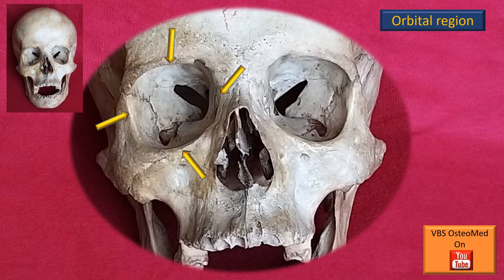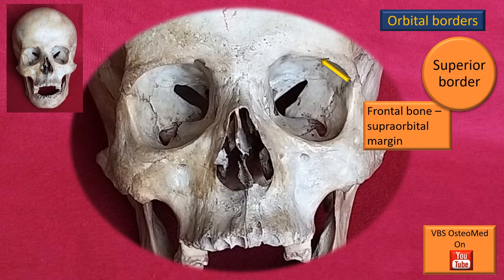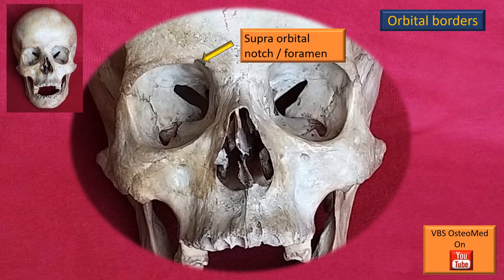These are the four borders of the orbit — the anterior orbital opening — respectively: superior, lateral, inferior, and medial. The superior border, as we have seen in part 1, is the supra-orbital margin belonging to the frontal bone. In this border, which is reasonably sharp, there will be either a supra-orbital notch or a foramen; in this case there is a notch.